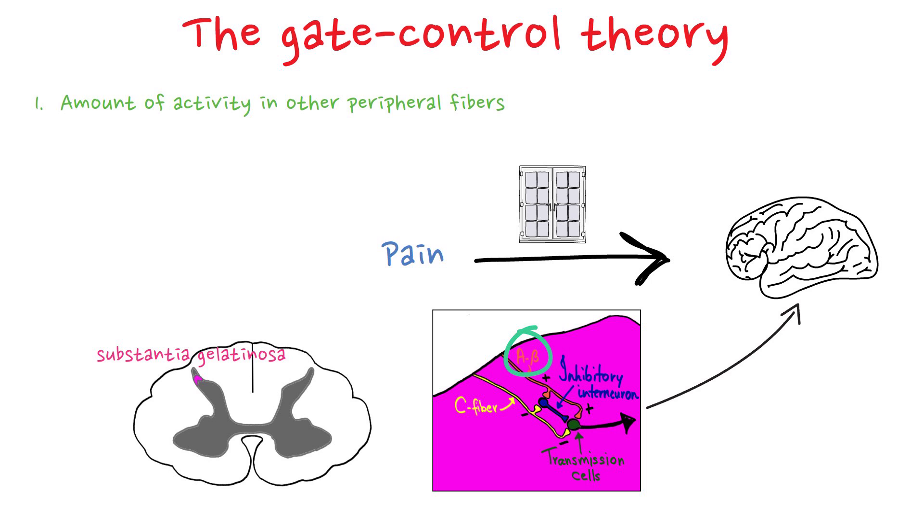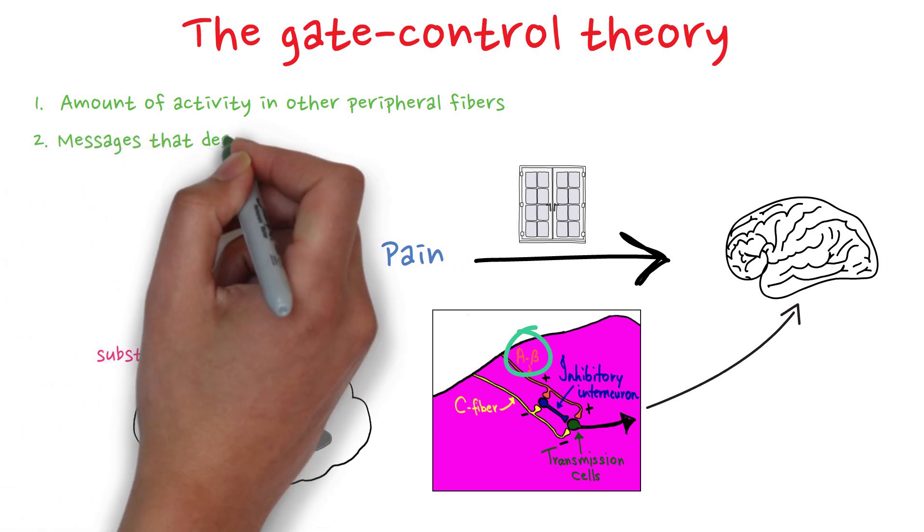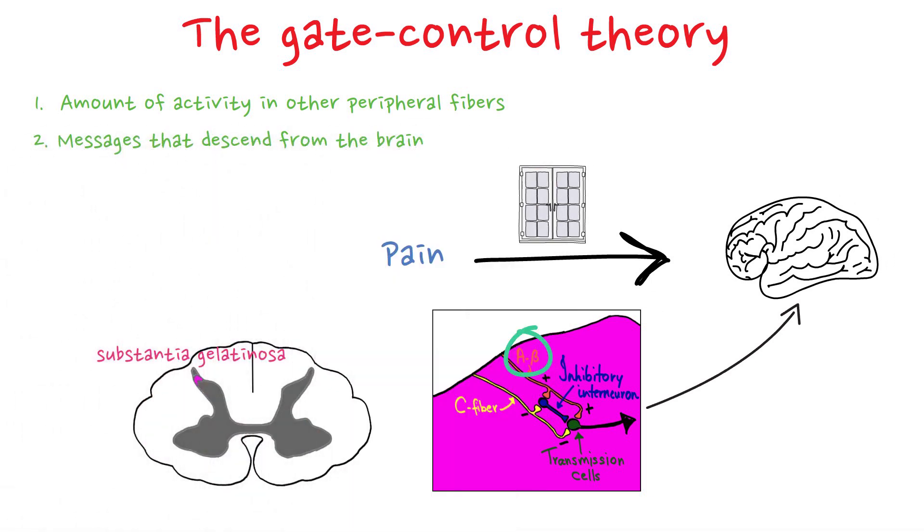In the second place, we have messages that descend from the brain. The effects of some brain processes, such as those in anxiety or excitement, probably have a general impact, opening or closing the gate for all inputs from any areas of the body. We will talk about this properly in another video.